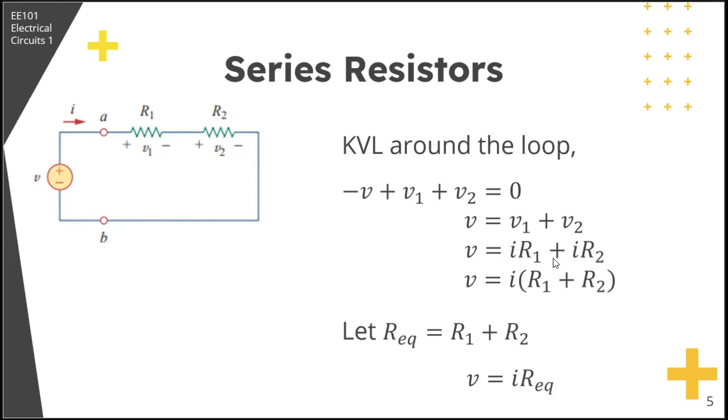Then we can factor out I. So we have V equal to I times the quantity R1 plus R2. Now if we introduce another variable, we call it R equivalent, which is equal to R1 plus R2, then this equation can be reduced to V equal to I R equivalent.